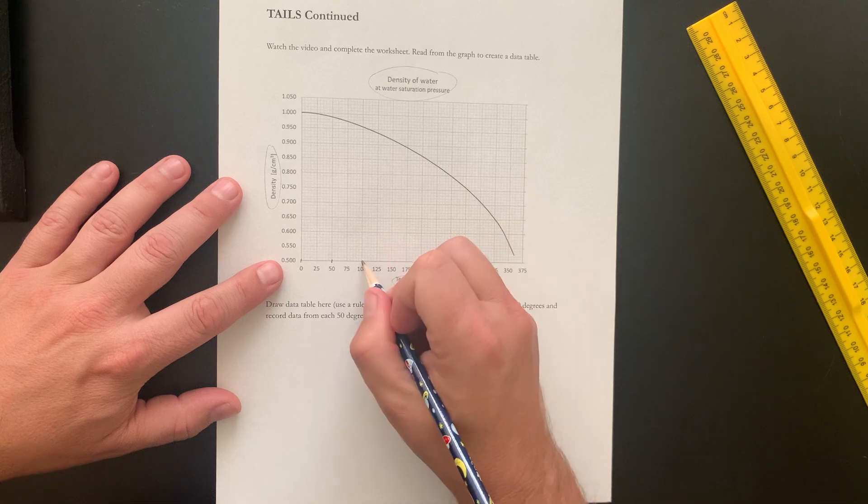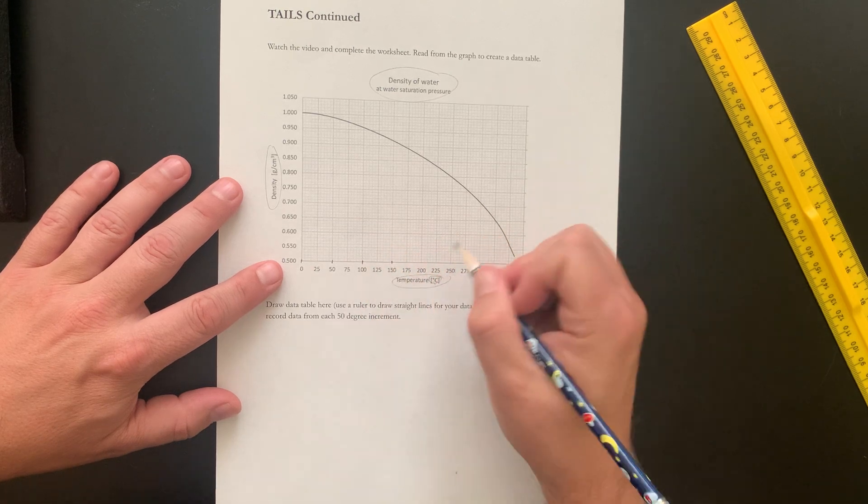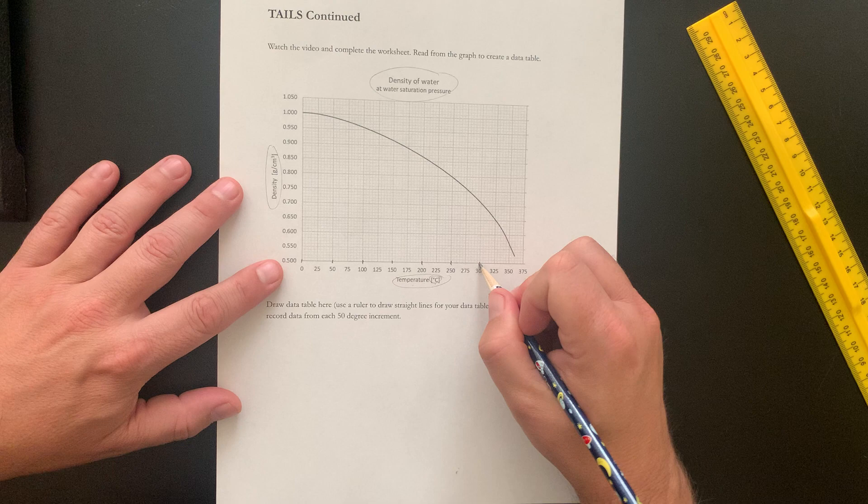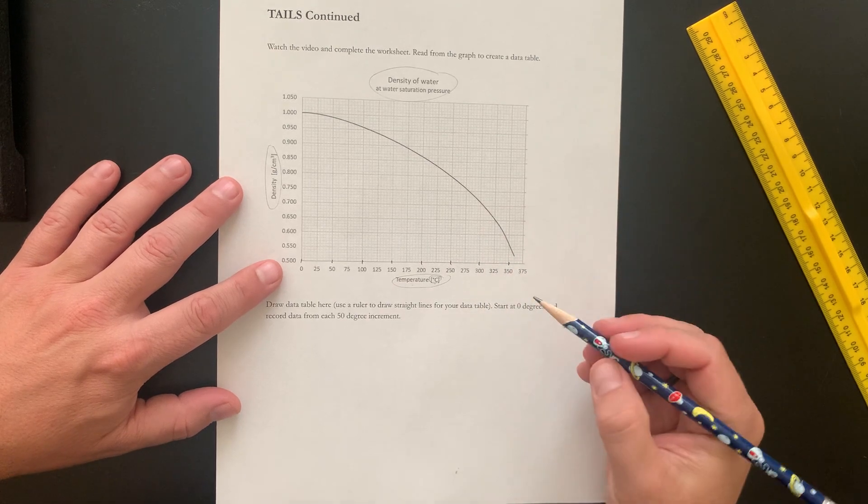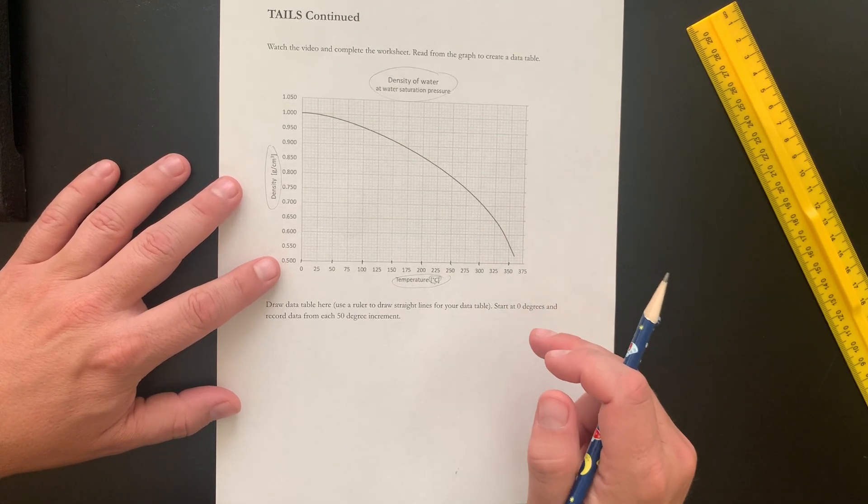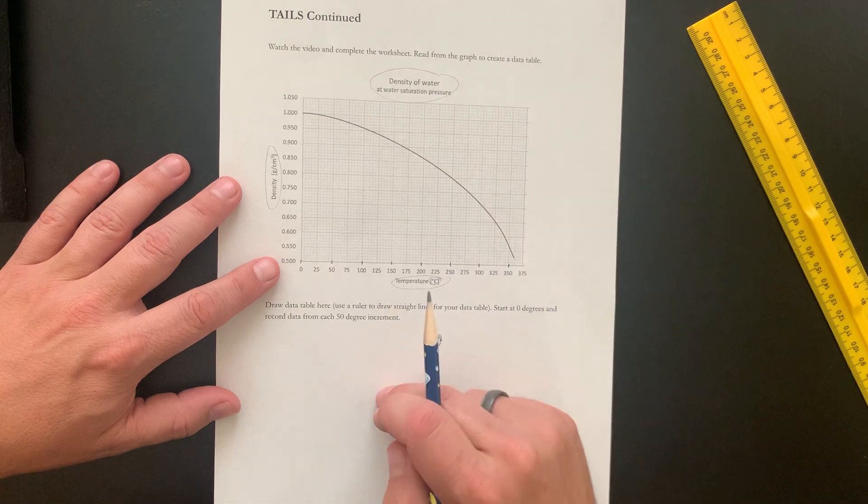So 0, 50, 100, 150, 200, 250, 300, and 350. So each of those is where I'm going to record the data into my data table.